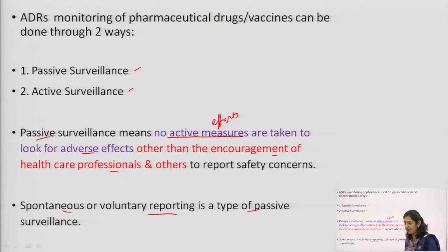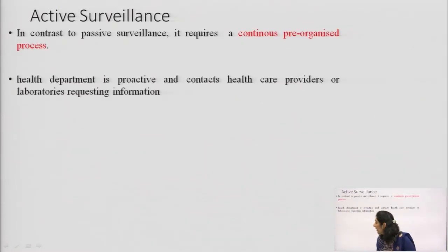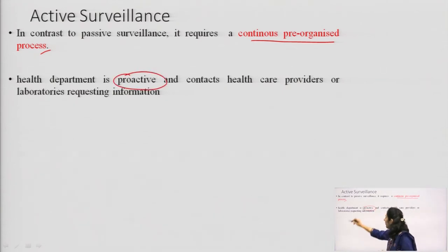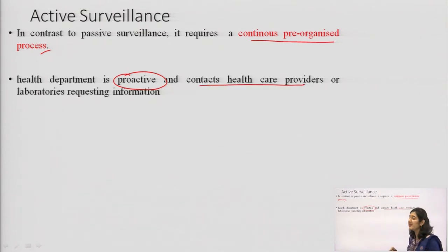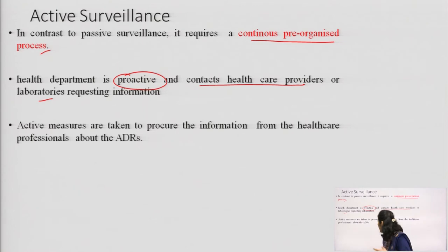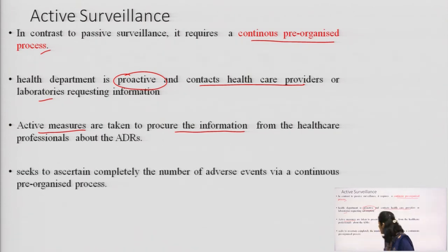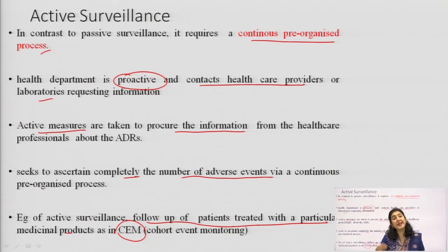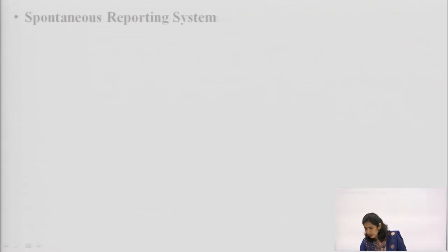Active surveillance, by contrast, requires a continuous pre-organized process. The health department is proactive — it contacts healthcare providers and labs to obtain information. Active measures are taken to procure information about adverse drug reactions; it seeks to completely ascertain the number of adverse events. An example is follow-up of patients treated with a particular medicinal product, as done in cohort event monitoring, which will be covered in the next video on active surveillance.